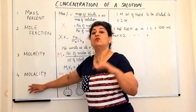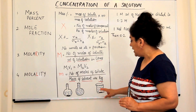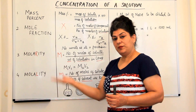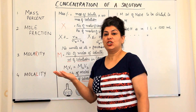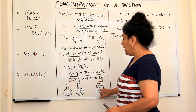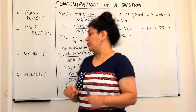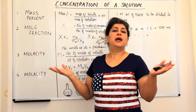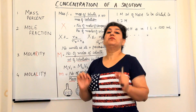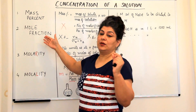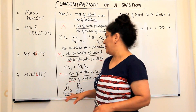If I was supposed to prepare a 1 molal solution of sodium chloride, I would again weigh 58.5 grams of sodium chloride. But I don't need a volumetric flask — I can just take a beaker, weigh it on a balance, and add 1 kg of water to it. Once I have 1 kg of water, I add the 58.5 grams of sodium chloride, stir it, and I get a 1 molal solution of sodium chloride.